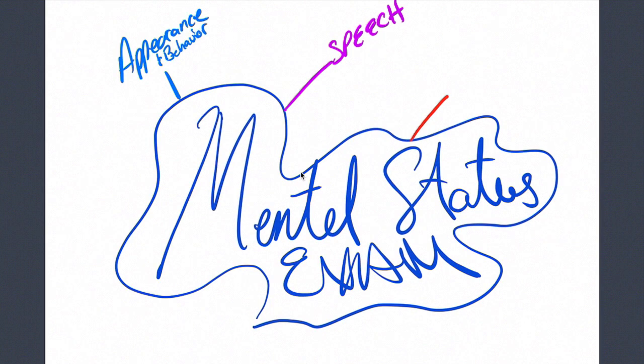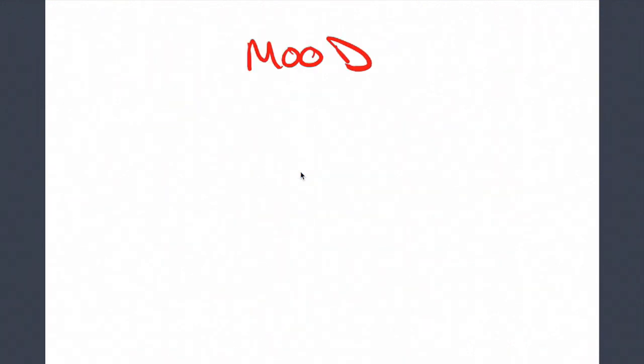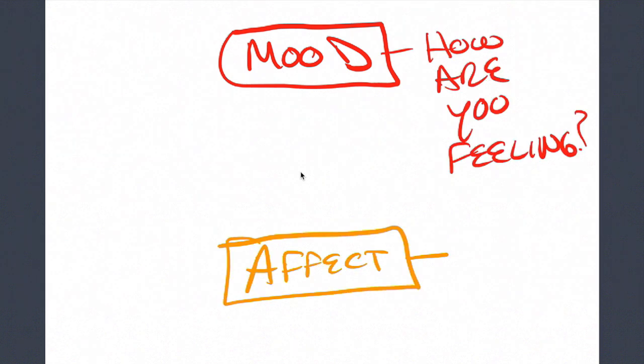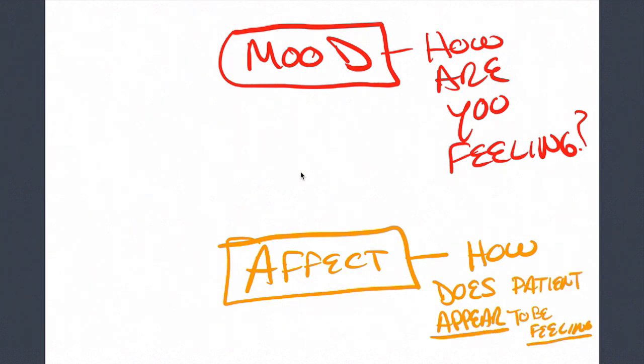Another part of the mental status exam is the patient's mood and affect. When we're talking about mood, we're asking the patient in their own words how they're feeling, as opposed to affect, which is how does the patient appear to be feeling? Another way to think of it is that mood is internal, so the patient's thoughts, versus affect, which is external.